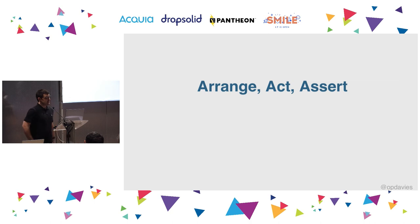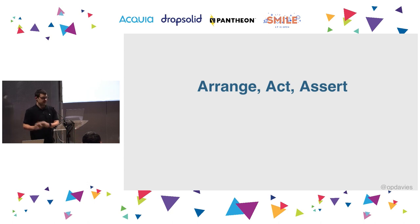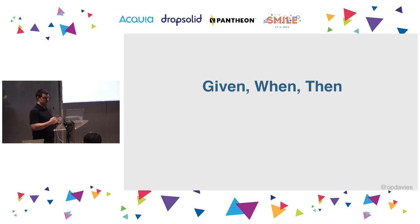There are three parts to a test: Arrange, Act, Assert. First we set up what we need to make our test work, then we perform some action, then we make assertions based on it. Given we've got these things, this thing happened — does our site now look like this? You can also mirror this to Given/When/Then, which maps well to user stories and acceptance criteria: given I'm logged in as this user, when I do this thing, then that should happen.